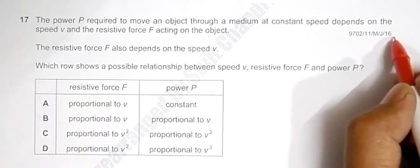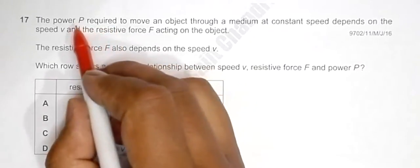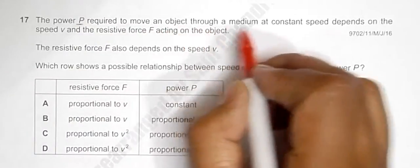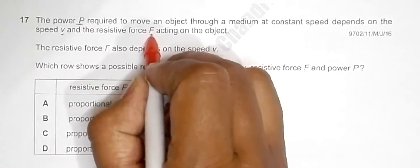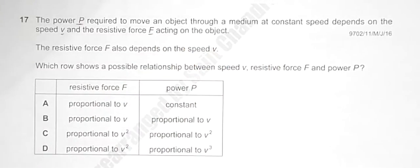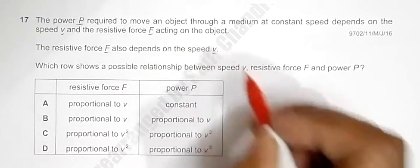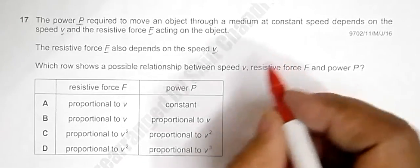This is question 37 from the 2016 major paper one, question one. It says: the power P required to move an object through a medium at constant speed depends on the speed V and the resistive force F. The resistive force F also depends on the speed V. Which shows a possible relationship between speed V, resistive force F, and power P?